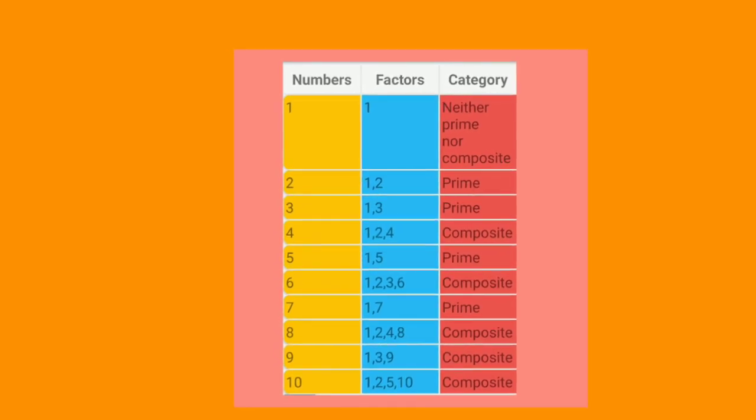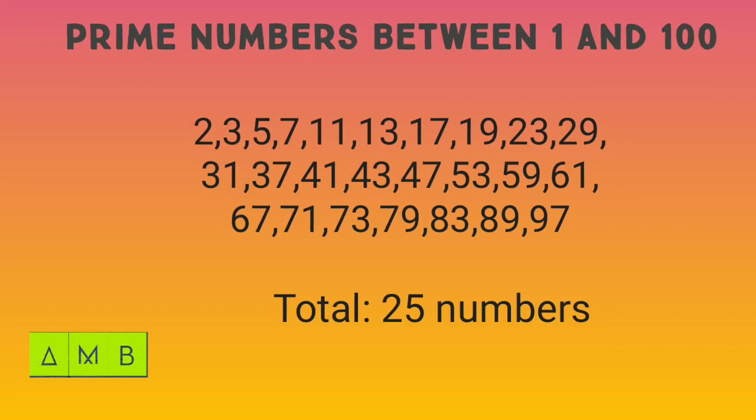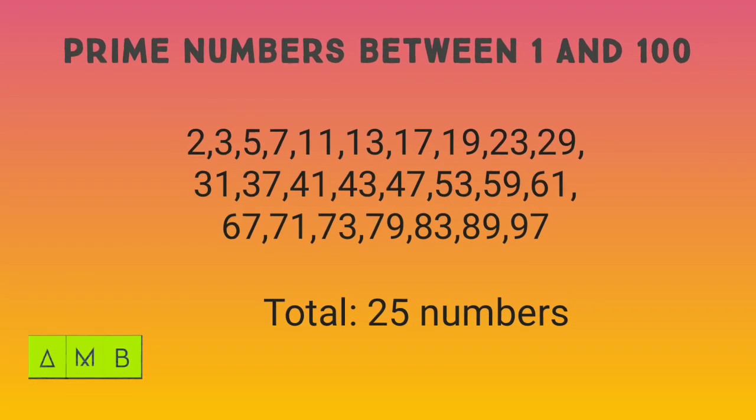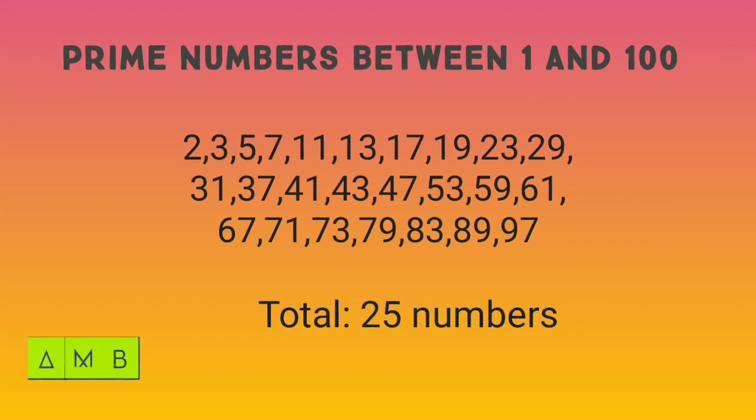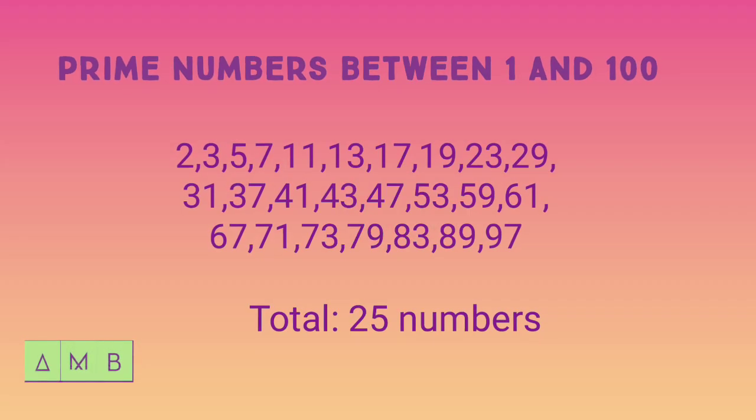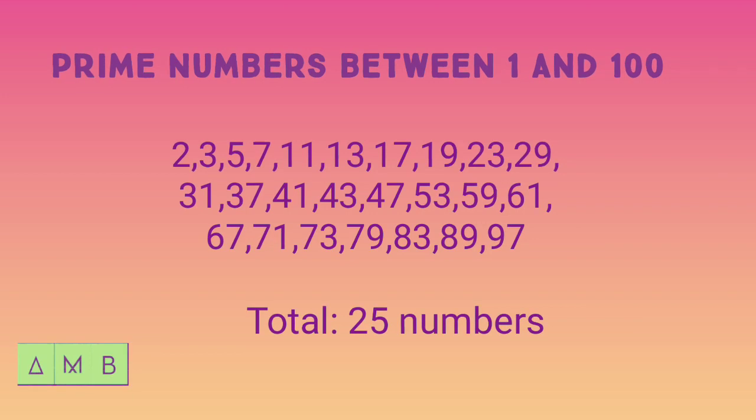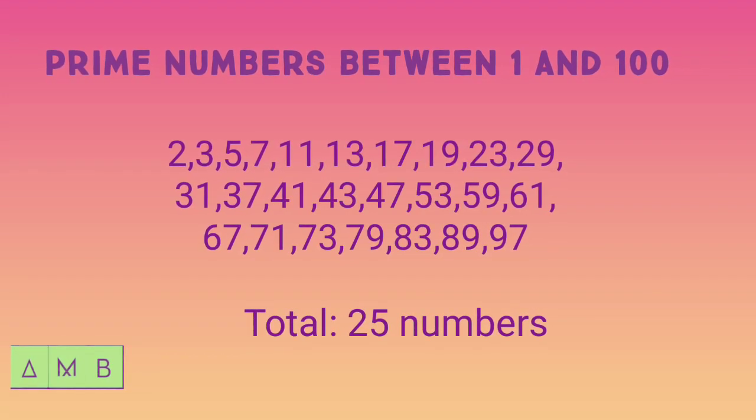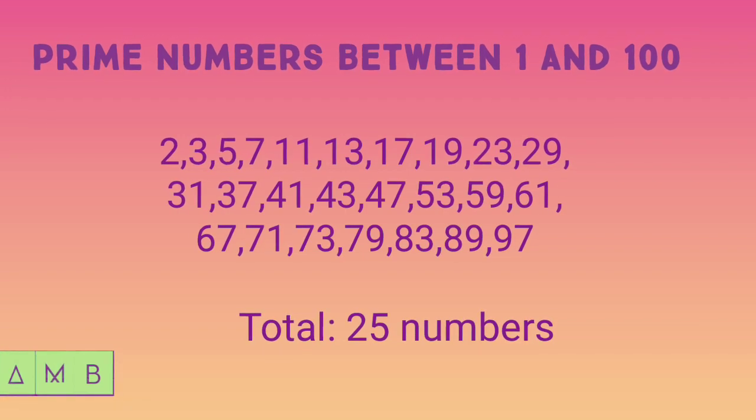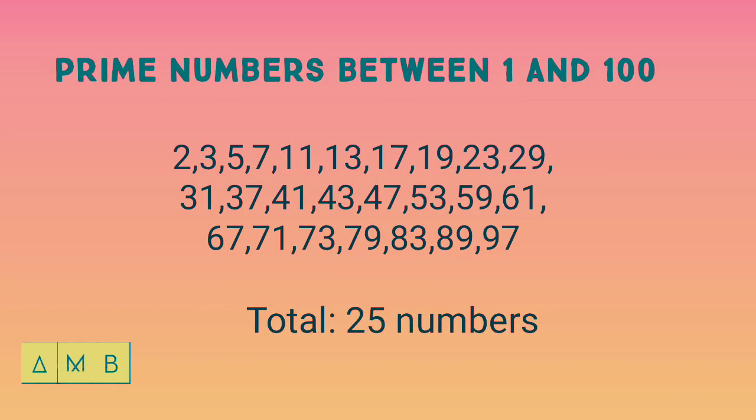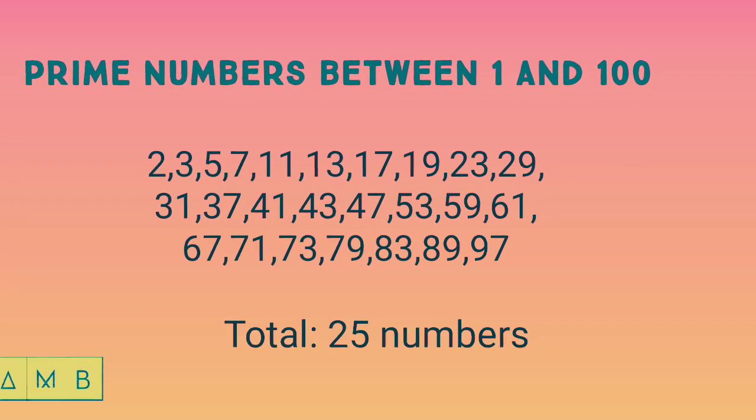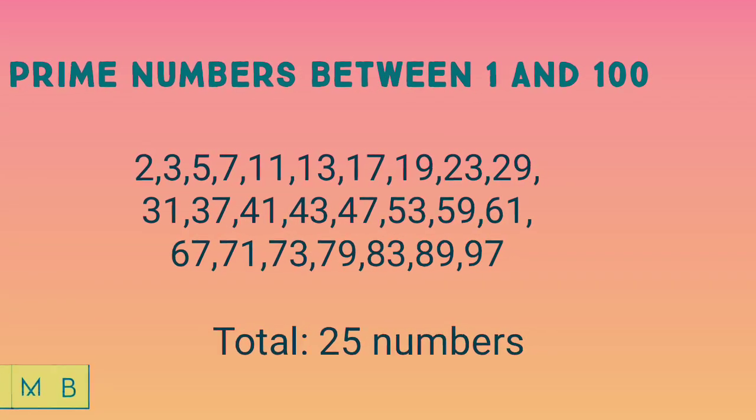Prime numbers between 1 and 100: they are 2, 3, 5, 7, 11, 13, 17, 19, 23, 29, 31, 37, 41, 43, 47, 53, 59, 61, 67, 71, 73, 79, 83, 89, 97. There are 25 prime numbers between 1 and 100.